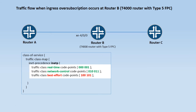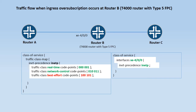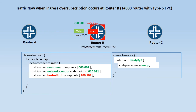Then you need to associate the traffic class map with the interface on the router. The main advantage of these user-defined traffic class maps is that during ingress over subscription, the router interface uses this user-defined traffic class map to select the packet priority and forwards or drops the packets accordingly.